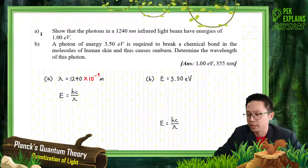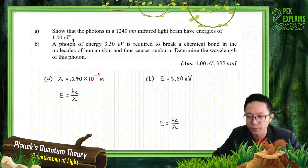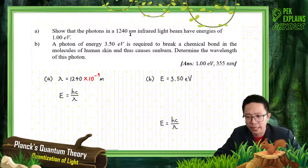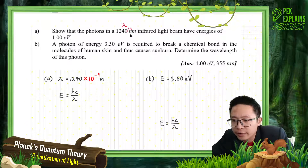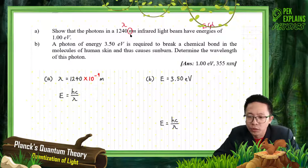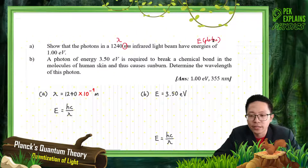Alright, now let's look at this question. Part A: Show that the photons in a 1240 nanometer infrared light beam have energies of 1 electron volt. This question wants us to show the photons of this wavelength - this is the wavelength in nanometers, so you have to change it to meters. Infrared light has energies, so we want to find the energy of the photon - 1 electron volt.